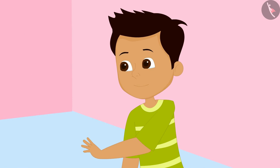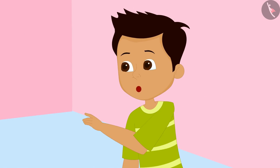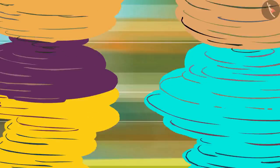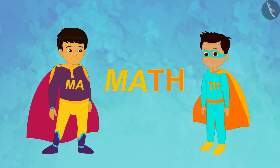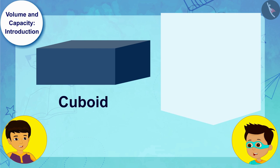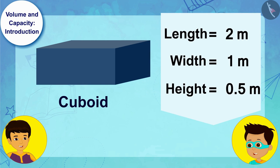We can easily find this through mathematics. That means it's math time! Look, this tank is a cuboid and its dimensions are: length 2 meters, width 1 meter, and height 0.5 meters. Can you tell me what the volume of this cuboid tank will be?